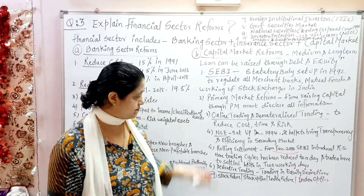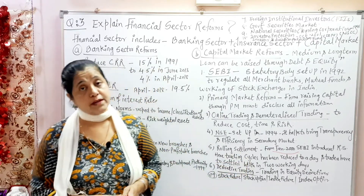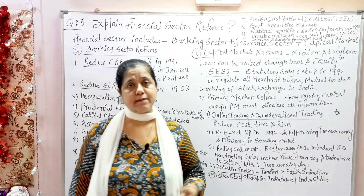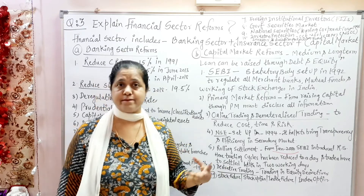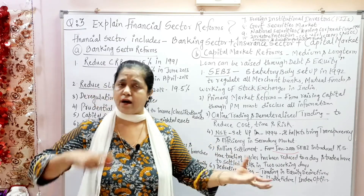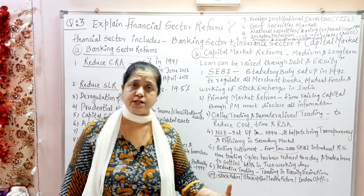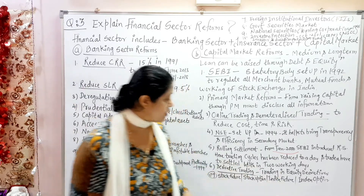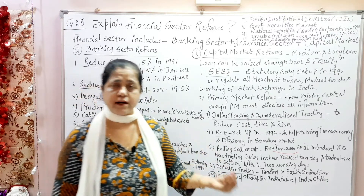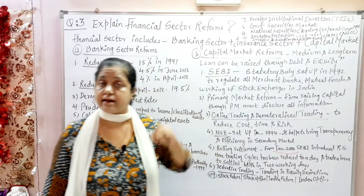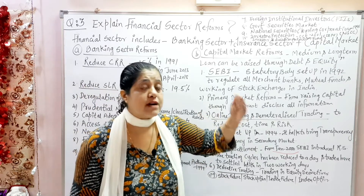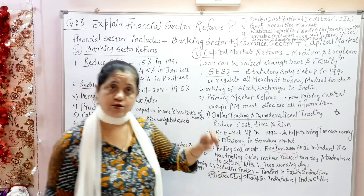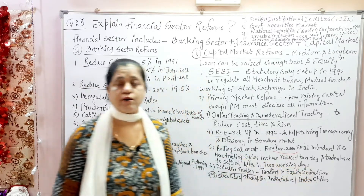The sixth reform was derivative trading, introduced by SEBI in the capital market. Derivatives involve one or more parties dealing in commodities, gold, securities, or government assets. This includes futures, forwards, swaps, and index instruments. Examples include stock futures, stock options, index futures, and index options — all systematically settled through the derivative trading process introduced by SEBI.